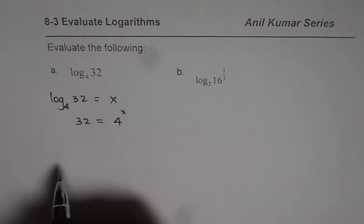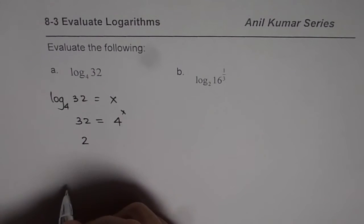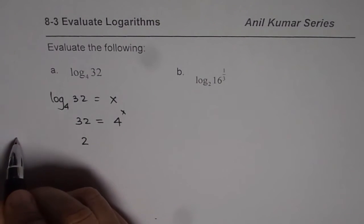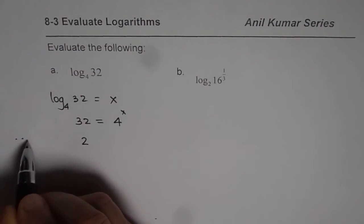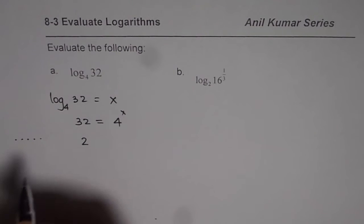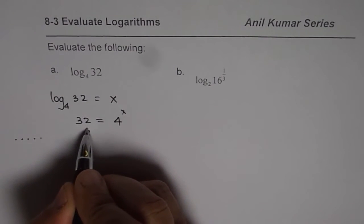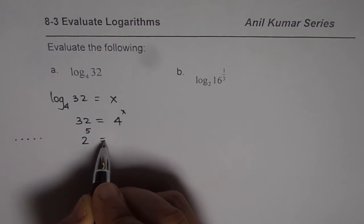Now, 32 can be written as 2 to the power of what? 2 times 2 is 4, 4 times 2 is 8, 8 times 2 is 16, 16 times 2 is 32. You can use your calculator also. So you get 2 to the power of 5 is equal to 32.